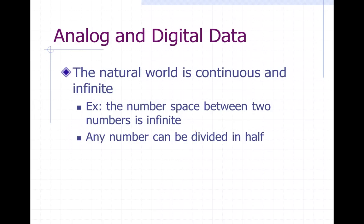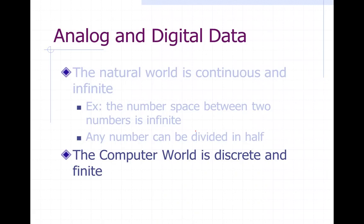First, one realizes that the natural world is continuous and infinite, which means that for example in the number space between any two numbers there is an infinite number of numbers, and any number can be divided in half. In the computer world, the world is discrete and finite, which means there's a limit to how much information can be represented, and it must be represented in very discrete baskets of information.